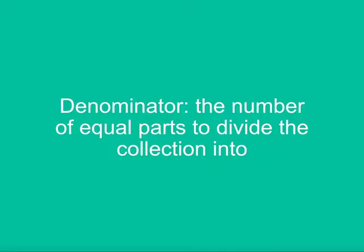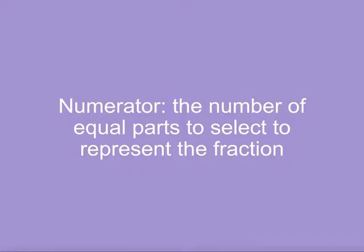When finding a fraction of a collection, we use the denominator to divide the collection into equal parts. Then we use the numerator to select the number of equal parts.